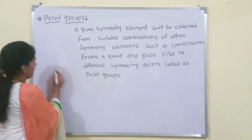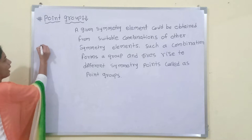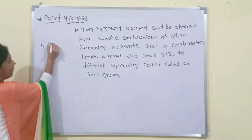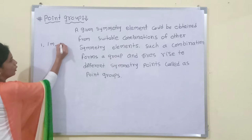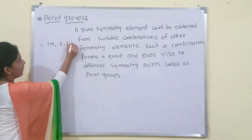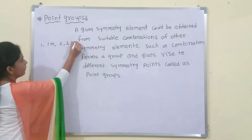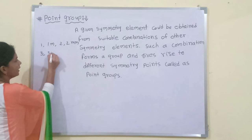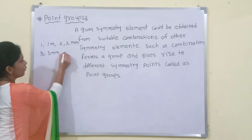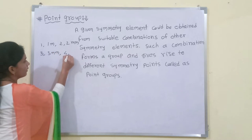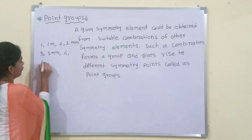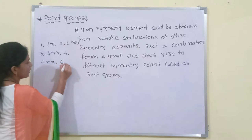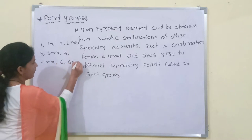The 10 symmetry operations are: 1, 1m, 2, 2mm, 3, 3m, 4, 4mm, 6, and 6mm.